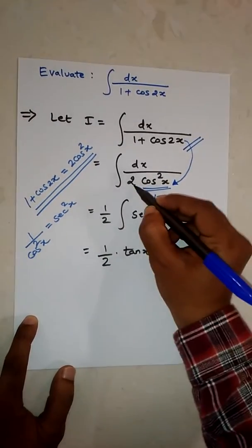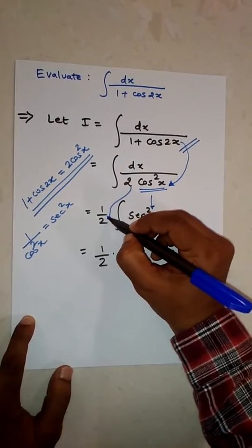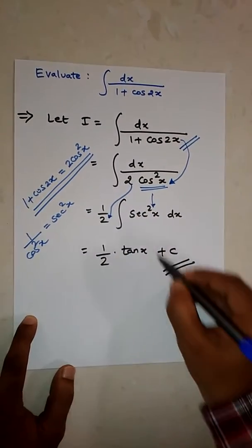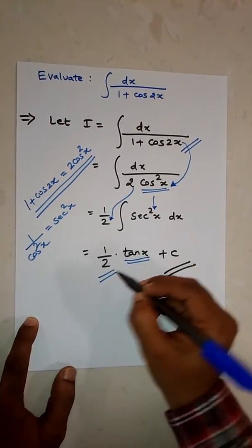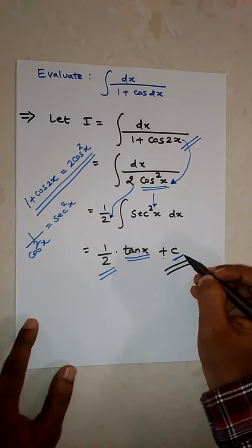Integration of sec square x is equal to tan x. Half will remain as it is, and at the end plus c. Thank you.